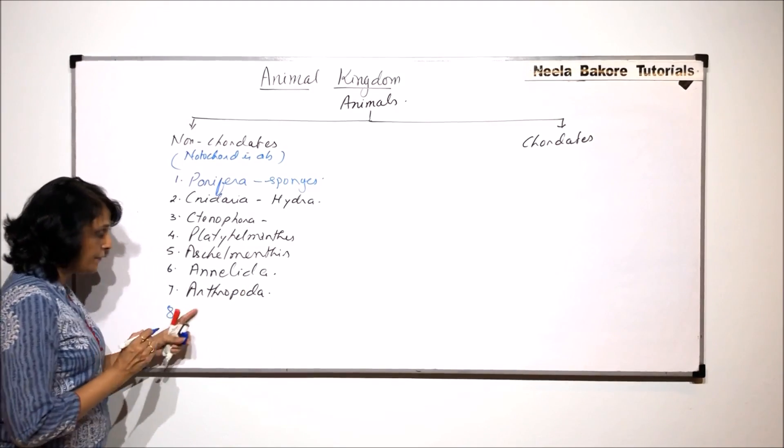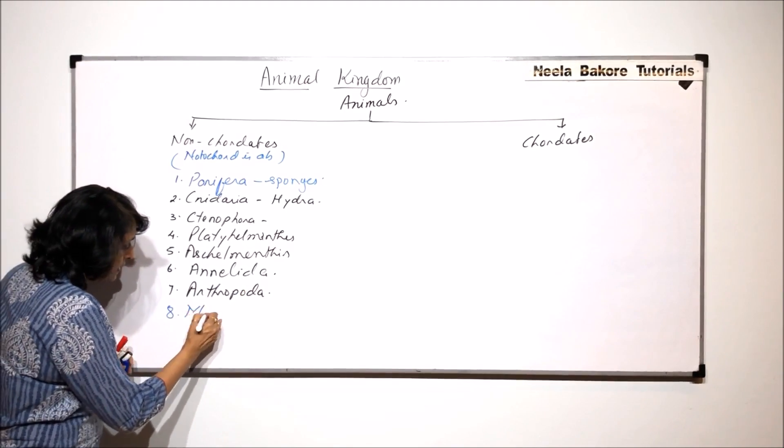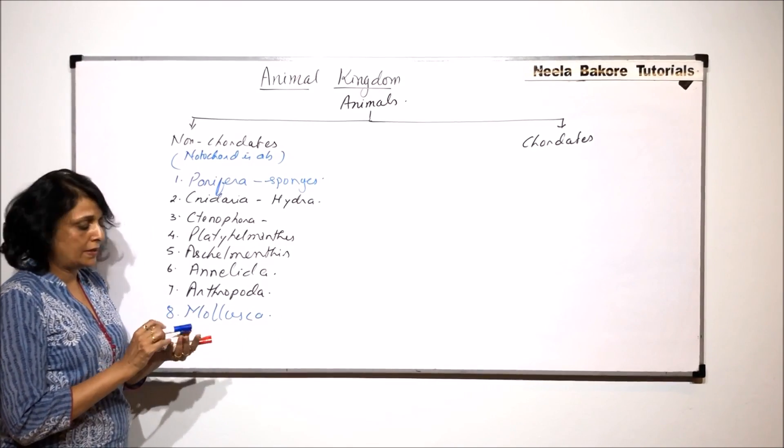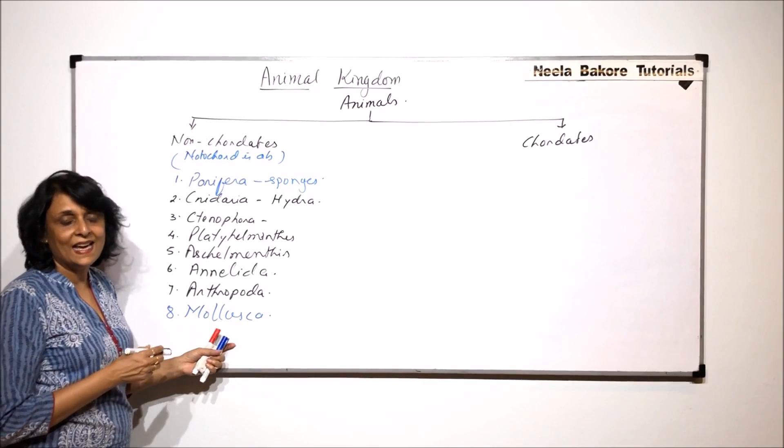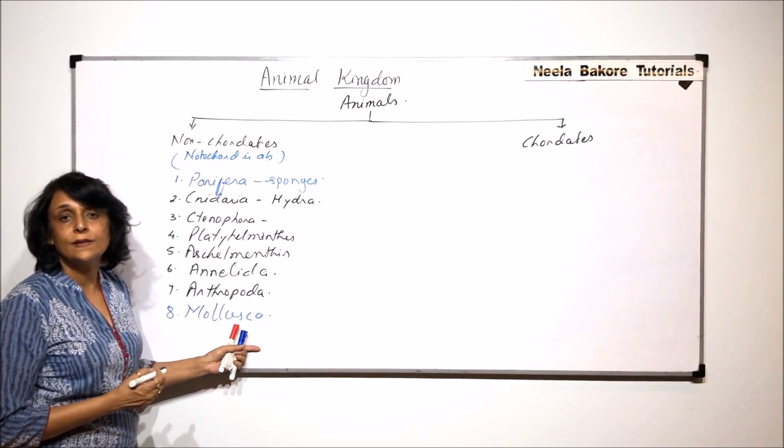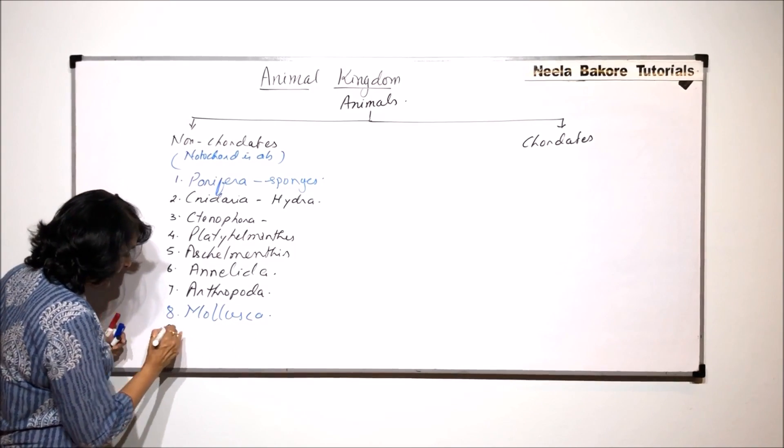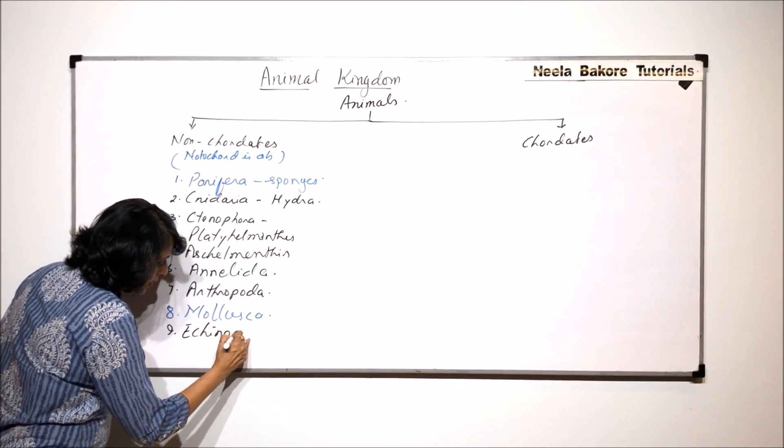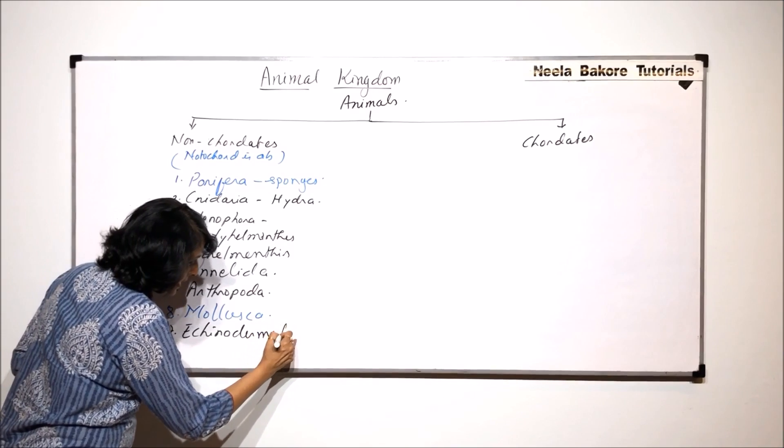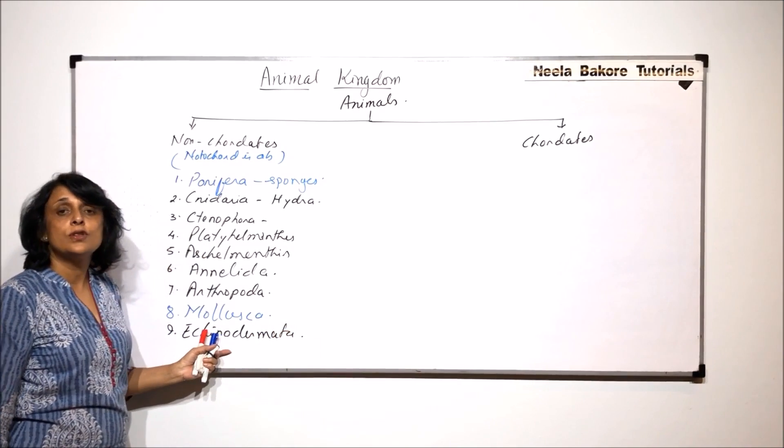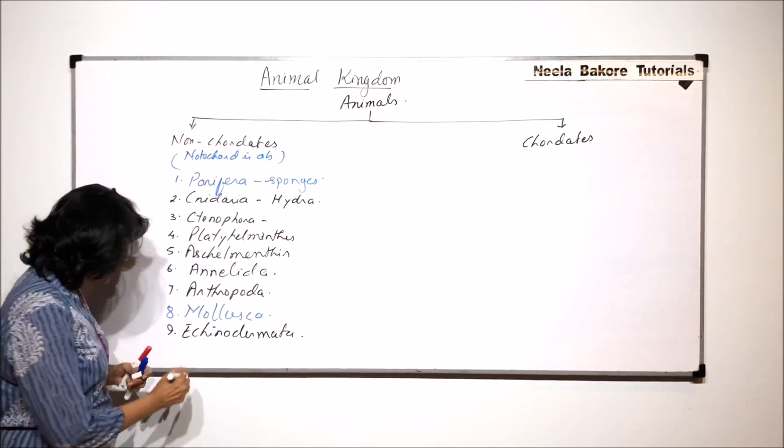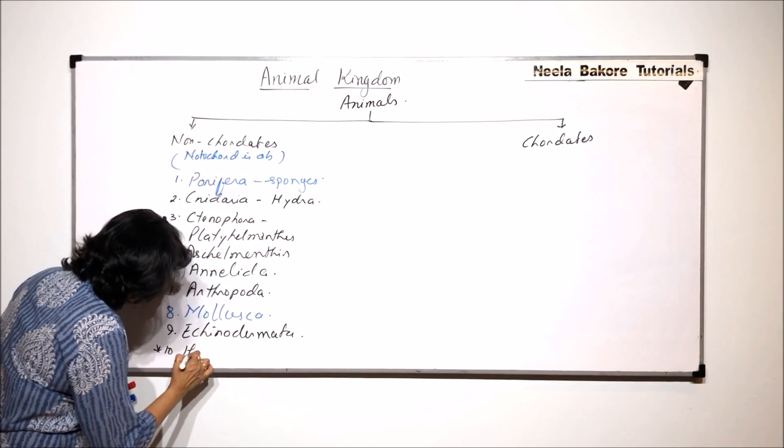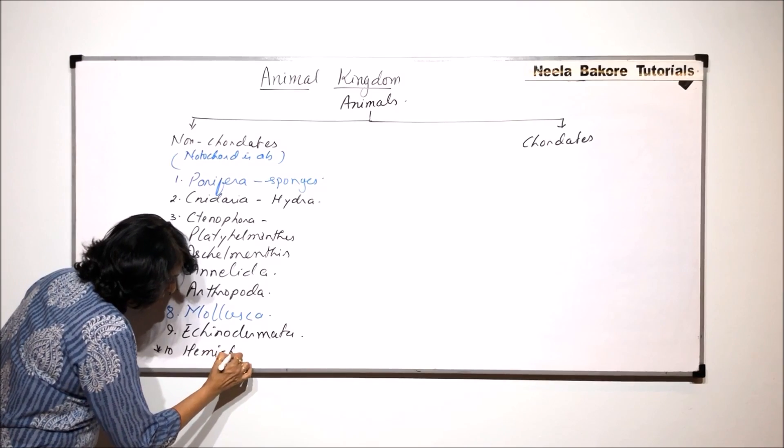The next one after Arthropoda is Mollusca. Here we talk of the animals which have shells like snails or without shells like octopus. The ninth phylum is Echinodermata. Echinodermata includes Starfish type of animals.